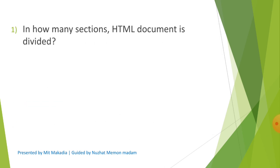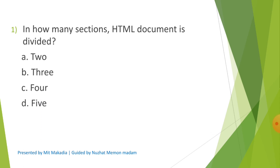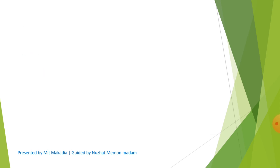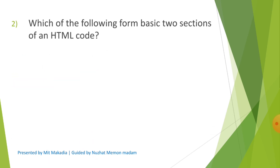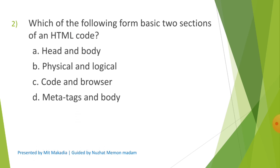Question 1: In how many sections is an HTML document divided? Options are A) 2, B) 3, C) 4, D) 5. The correct answer is A) 2. Question 2: Which of the following forms the basic two sections of an HTML code? Options are A) Head and Body, B) Physical and Logical, C) Code and Browser, D) Meta Tags and Body. The correct answer is A) Head and Body.